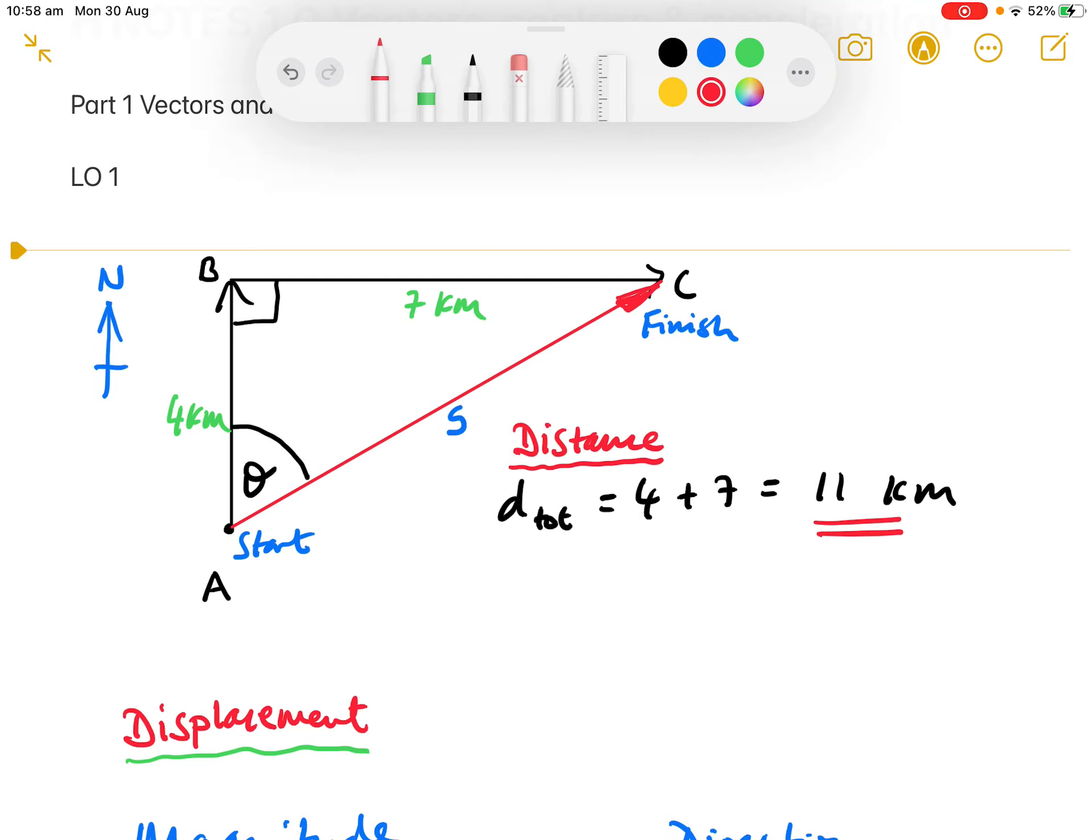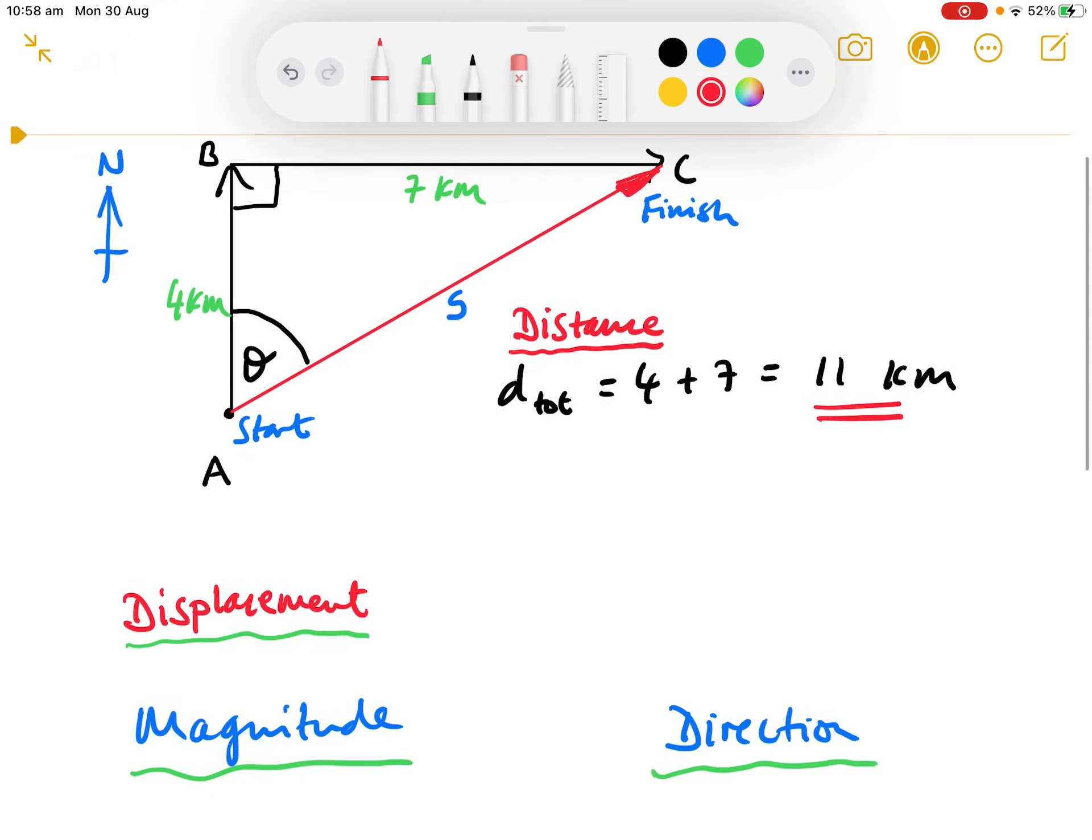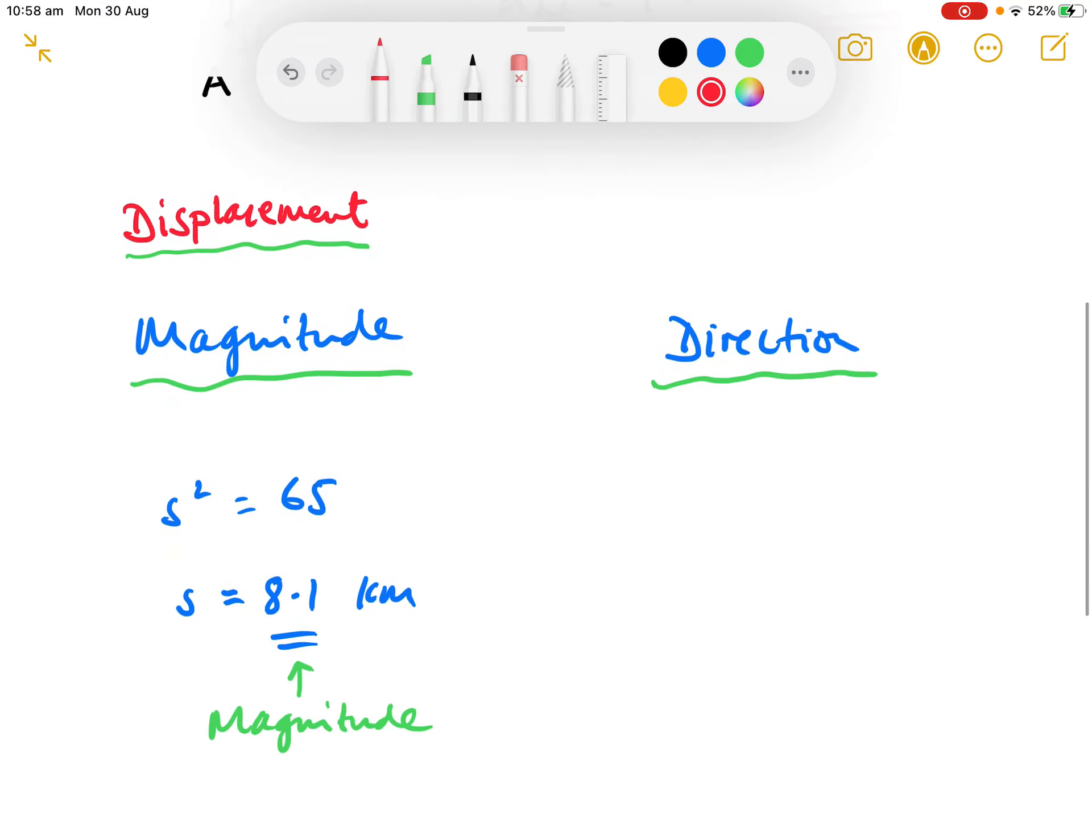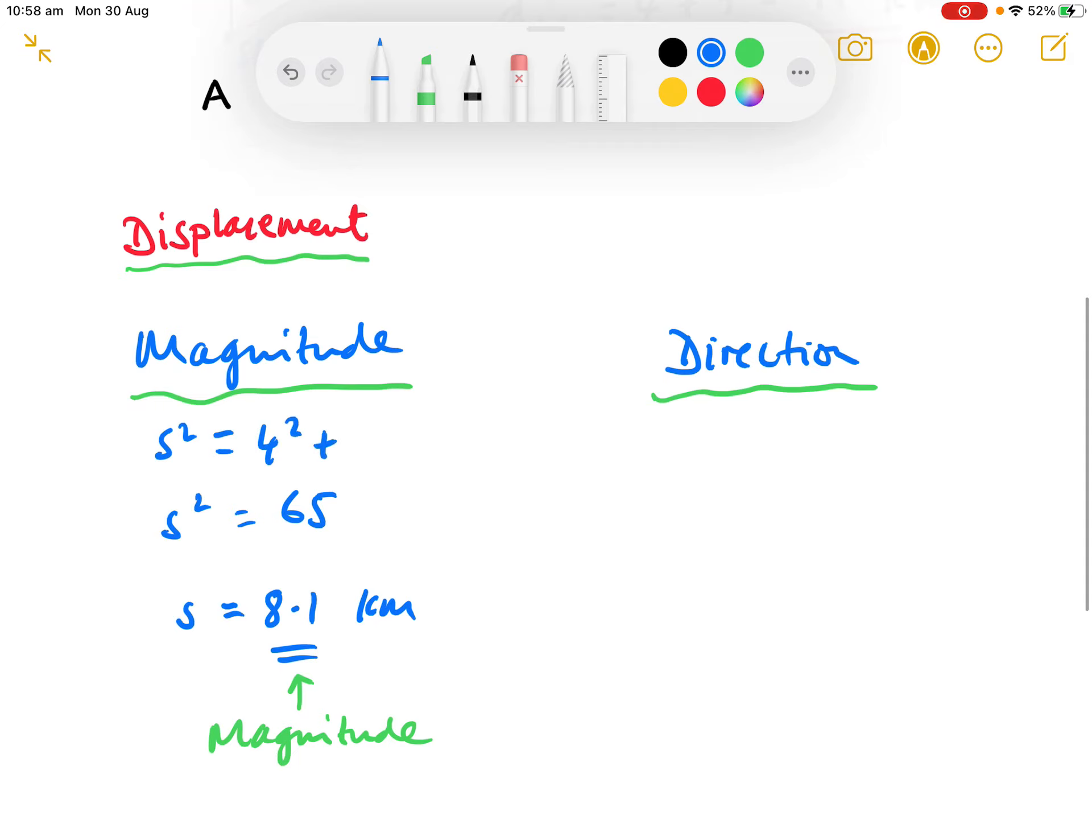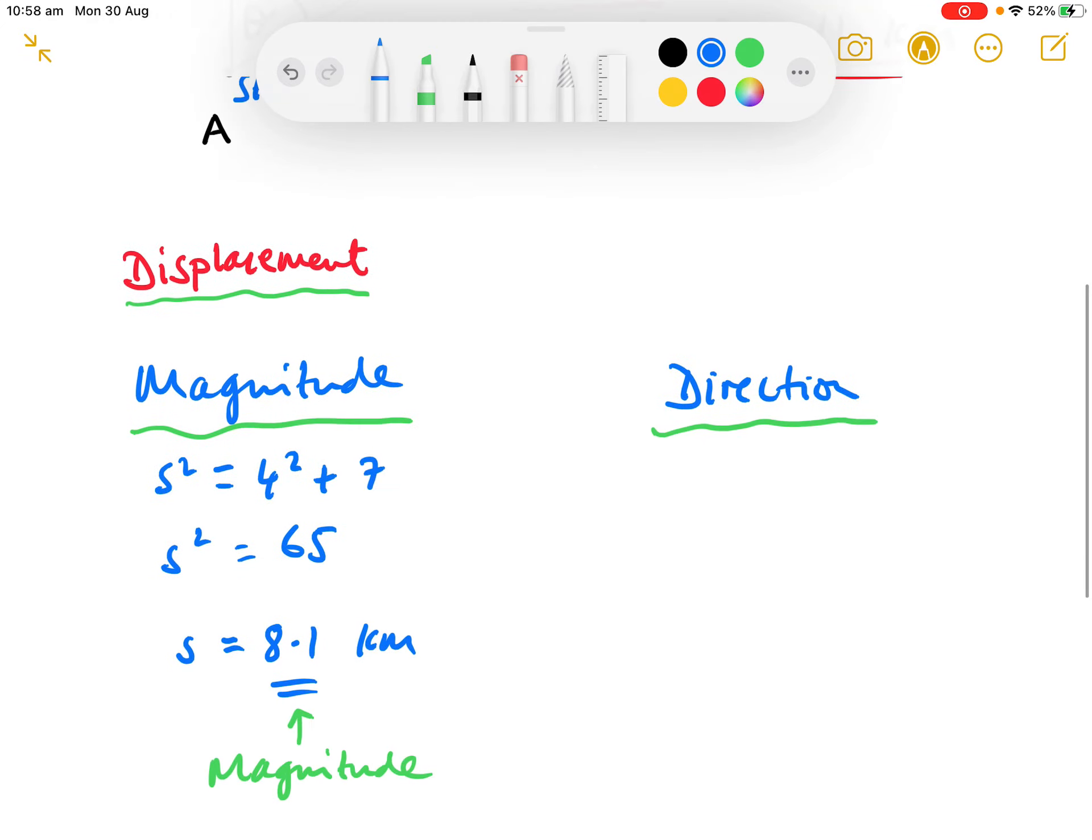To specify the displacement, we need to acknowledge that it consists of two parts, a magnitude and a direction. The magnitude is found from Pythagoras theorem. S squared equals 4 squared plus 7 squared. 4 times 4 is 16, 7 times 7 is 49, 49 and 16 is 65. S squared is 65, take the square root of that, and you get 8.1 kilometers. That is the magnitude sorted.